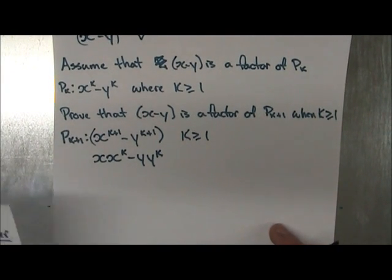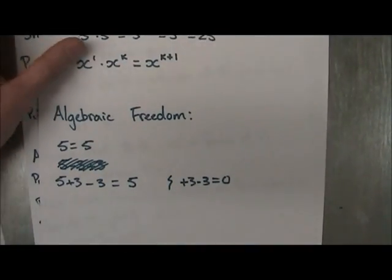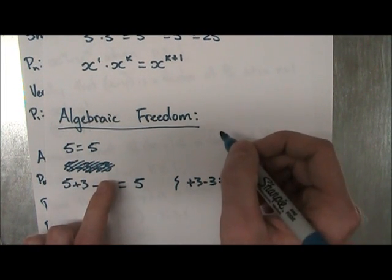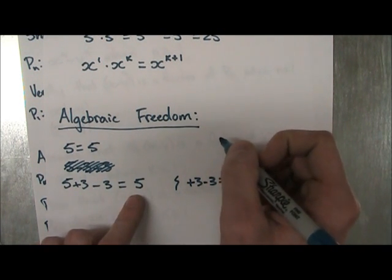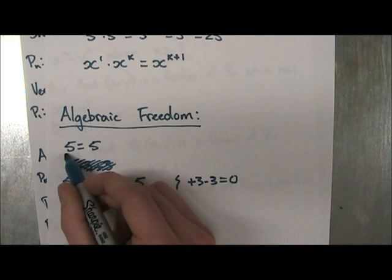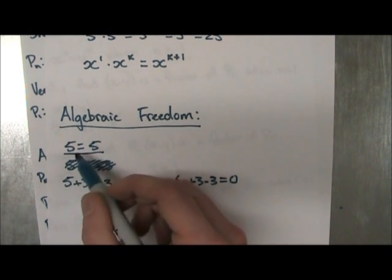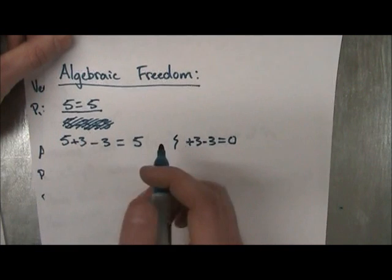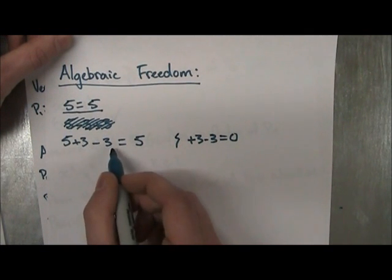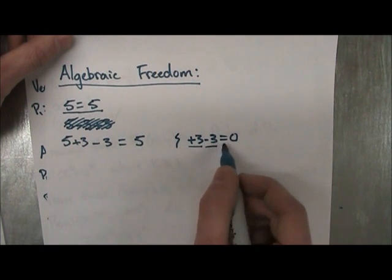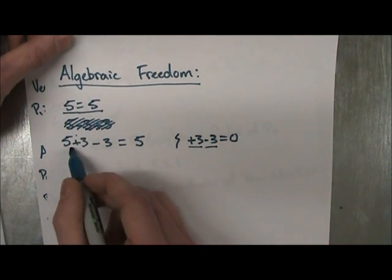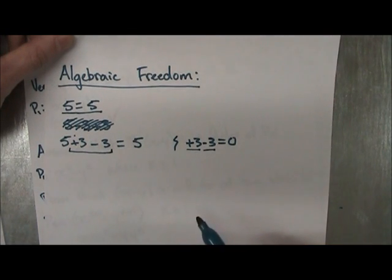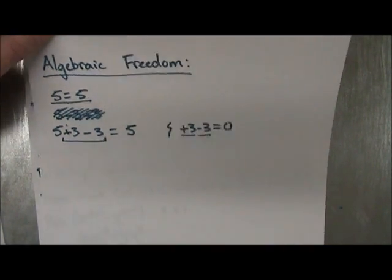There's actually one more thing you can do for this problem, which you might not have thought of, but it's called algebraic freedom. So what algebraic freedom is, is that you can add or subtract any number from an expression. Consider the statement 5 equals to 5. Pretty obvious. Well, you could also write it in this way. You could write 5 plus 3 minus 3 equals to 5, because when you take plus 3 minus 3, it equals to 0. So you're just adding 0 to 5, which is still 5. You can take any term. As long as you add it and subtract it, you can add it to your term.